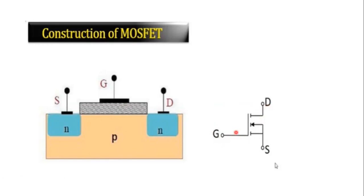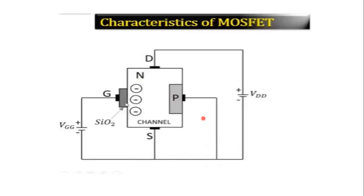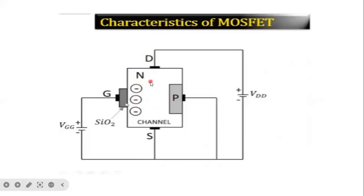This is a simple overview of MOSFET, and the characteristics of MOSFET can be obtained by using this circuit. The gate is separated by the SiO2 layer. When VGS — gate to source voltage — is applied, the positive terminal is connected to the gate and the negative terminal to the source, forming an N-channel.